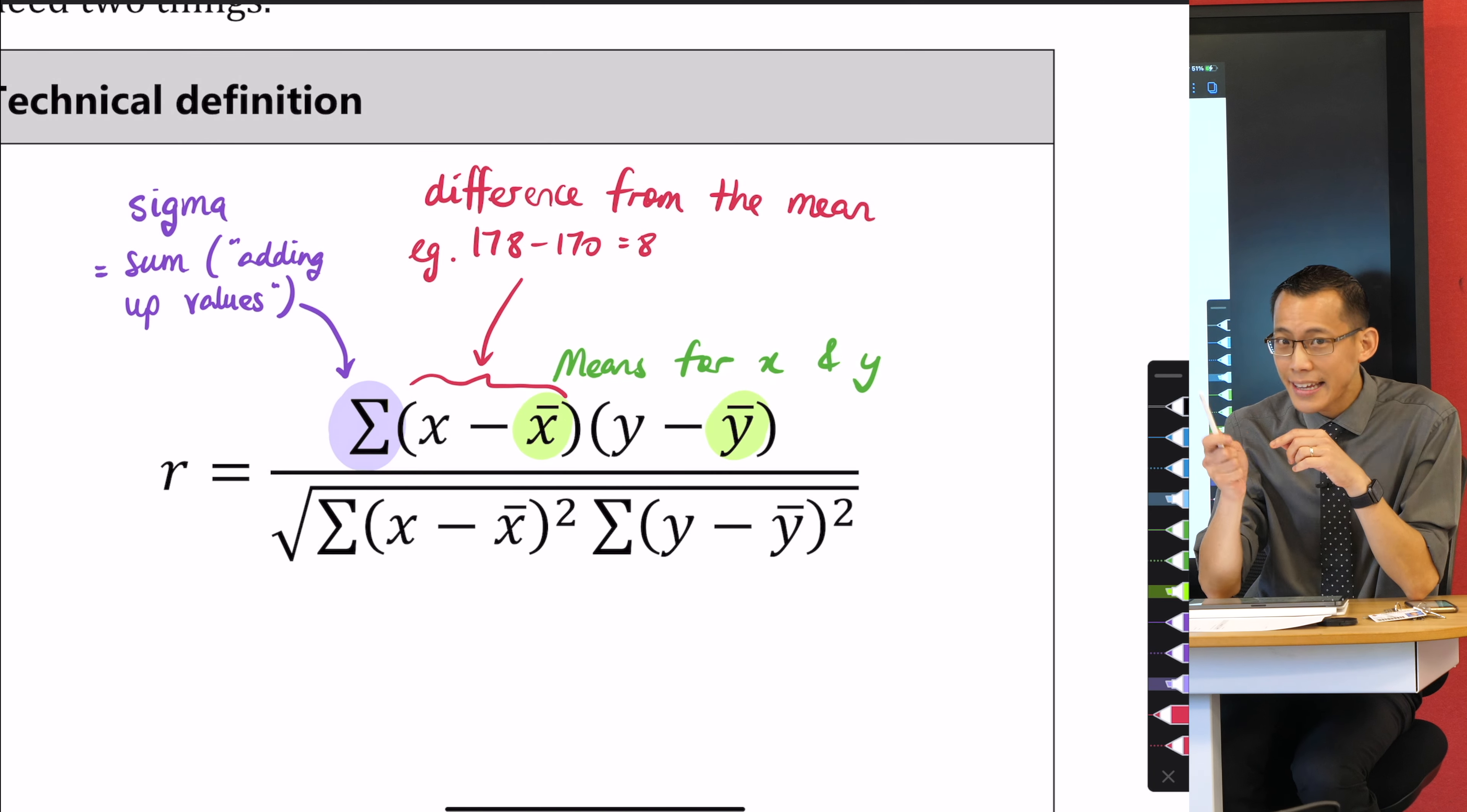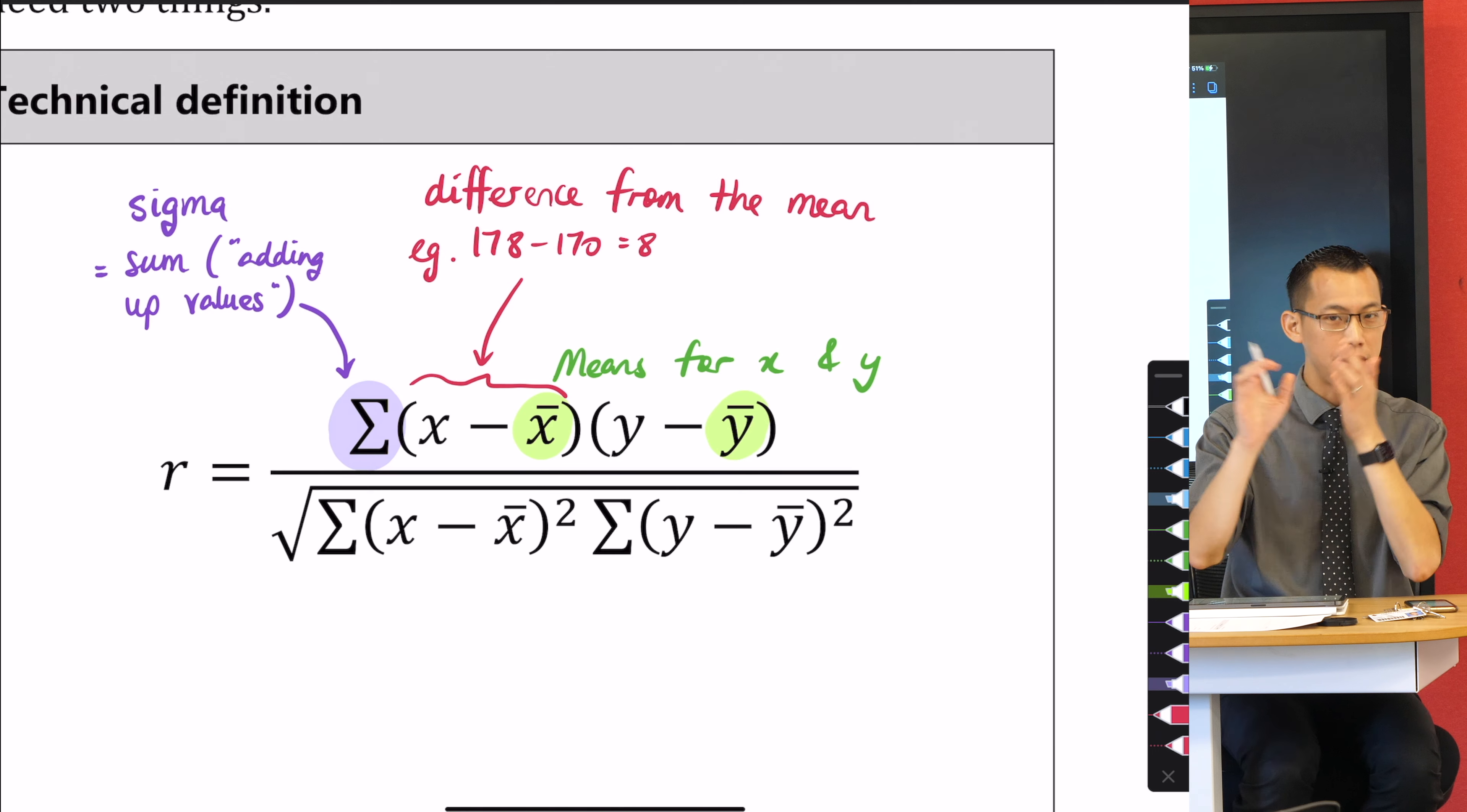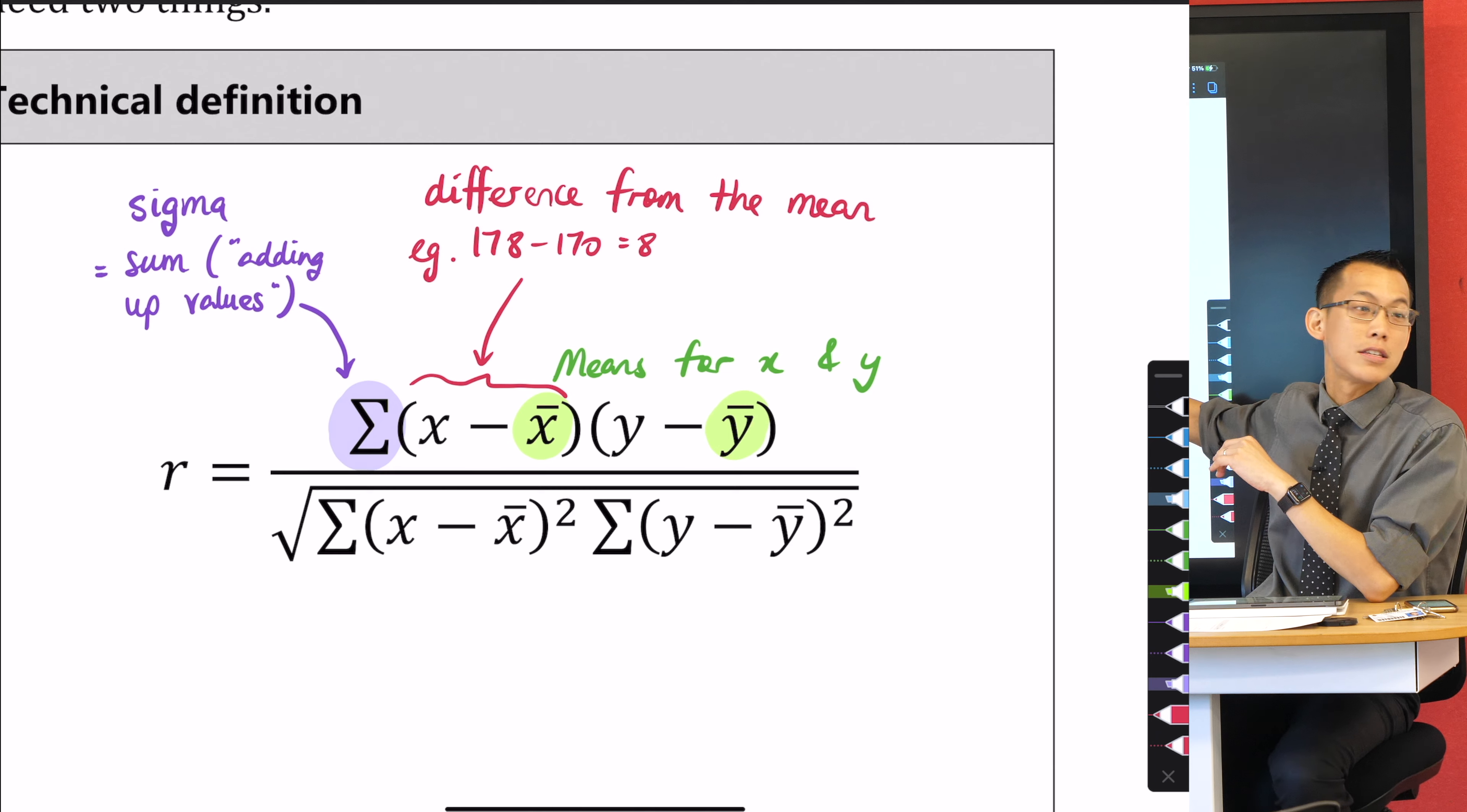So we've got the numerator. Now we are adding up a product—there's a multiplication here that is the combination of the differences from the mean. In other words, the further you are away from the mean, the bigger this numerator is going to be, and you're going to add up a bunch of these things.